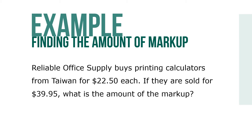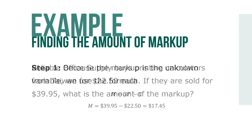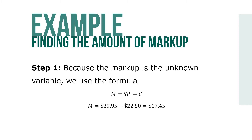Here's another example. Reliable Office Supply buys printing calculators from Taiwan for $22.50 each. If they're sold for $39.95, what is the amount of the markup? Because the markup is the unknown variable, we use the formula M equals SP minus C, so $39.95 minus $22.50 equals a total markup of $17.45.